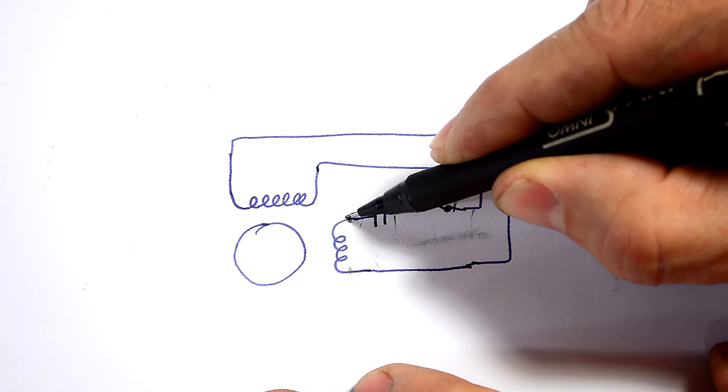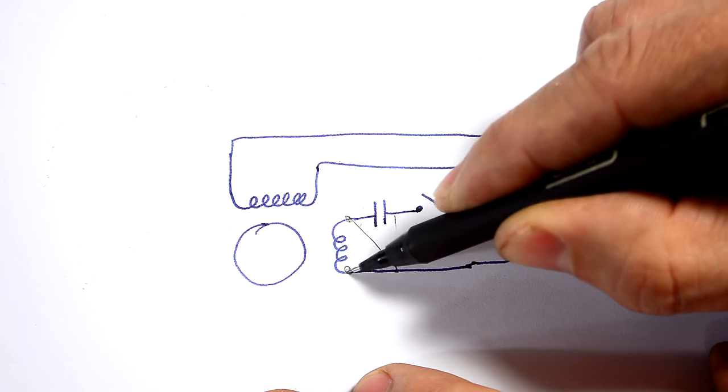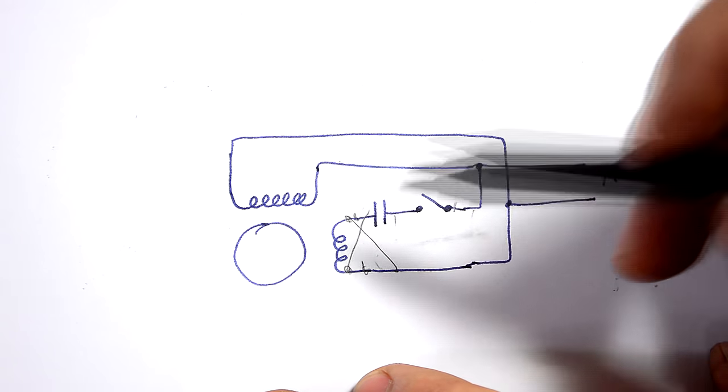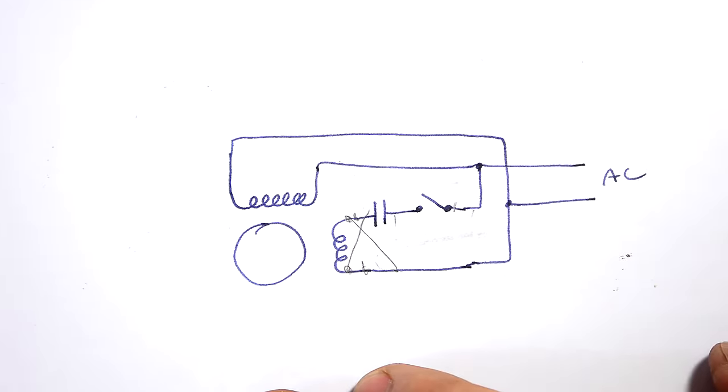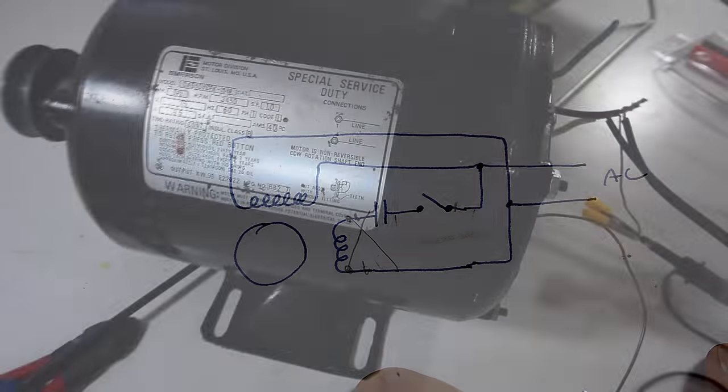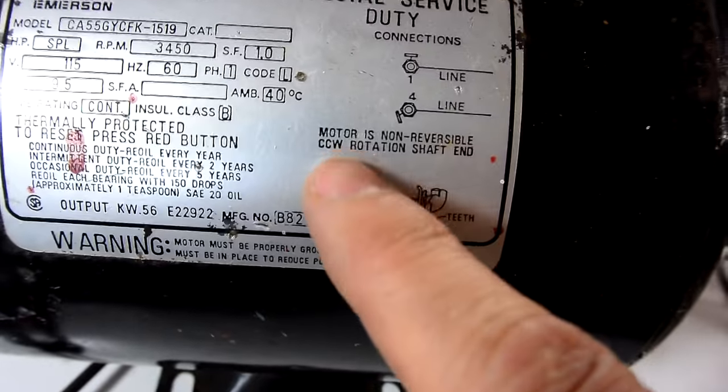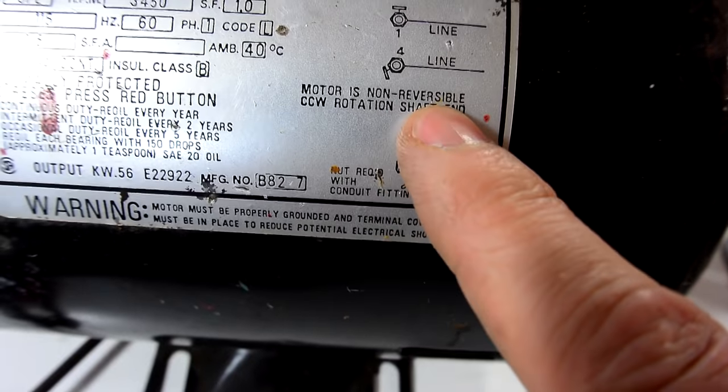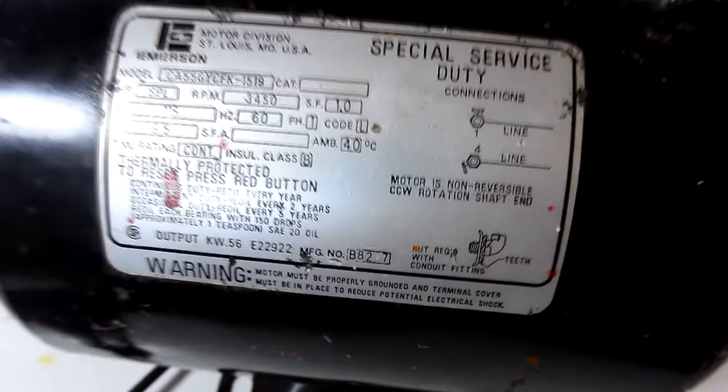So if we can for instance just connect this to here and connect this to here and break these connections we've swapped the polarity of this and it will start in the opposite direction. Except if I look on the label for this motor it says here motor is non-reversible. It should be reversible but why is it not?